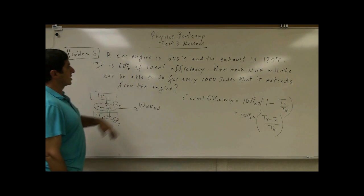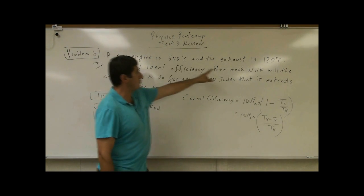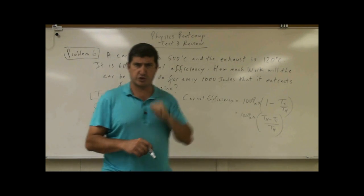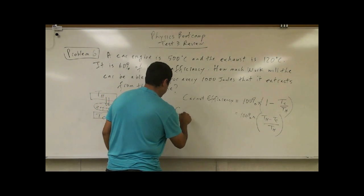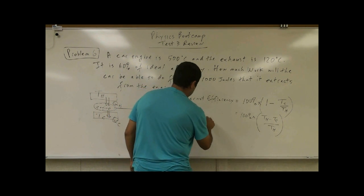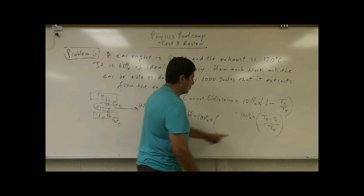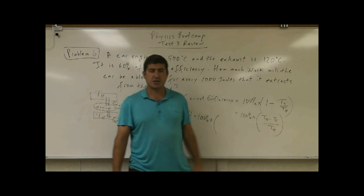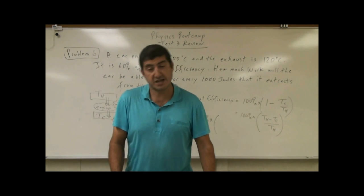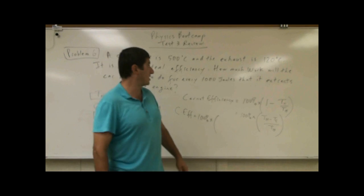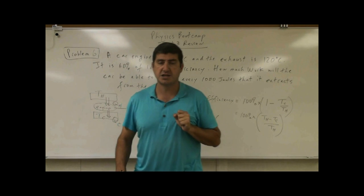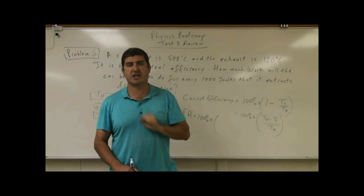So in this case, you are operating between 500 and 120. So what is the most efficient engine that you could have between these two temperatures? The Carnot efficiency in this case is going to be 100%. Now, when I subtract two temperatures, can I just subtract their Celsius or do I have to convert to Kelvin? The answer is you can just subtract their Celsius. 500 minus 120. Because a unit change of Celsius is the same as a unit change of Kelvin.